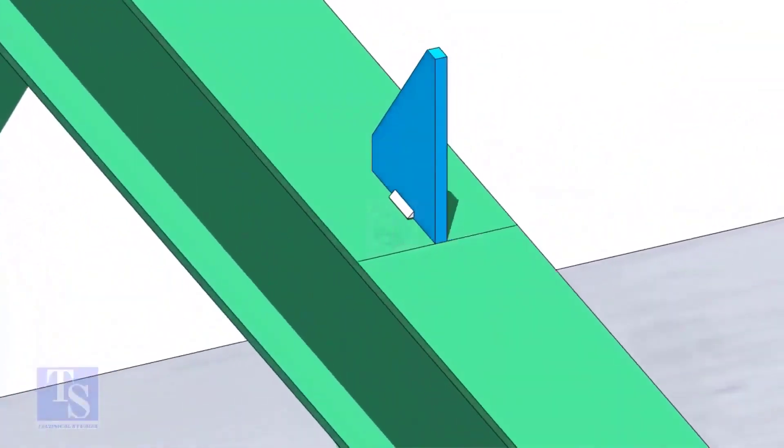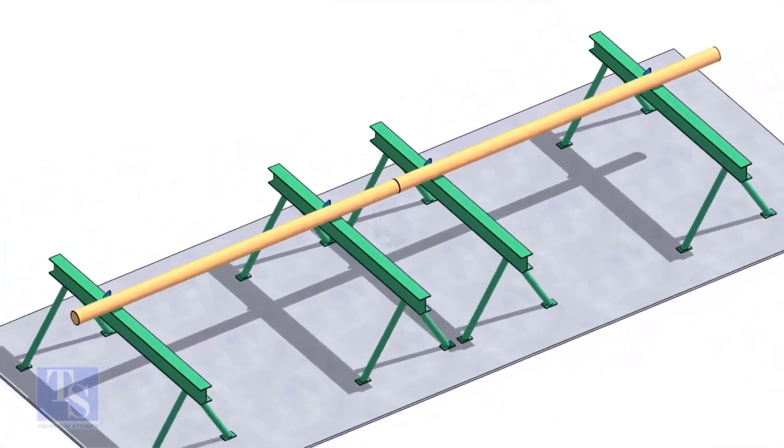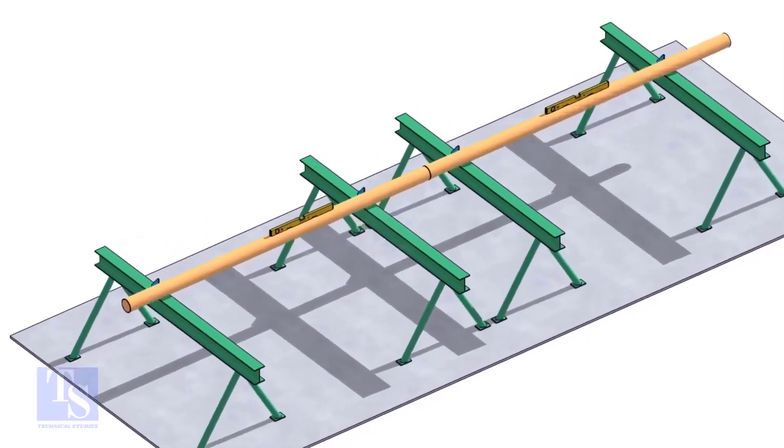Put the pipes on the stands, touching the stopper plates, as shown. The joint shall be in between the supports. Now the pipes are already straight, horizontally and vertically.